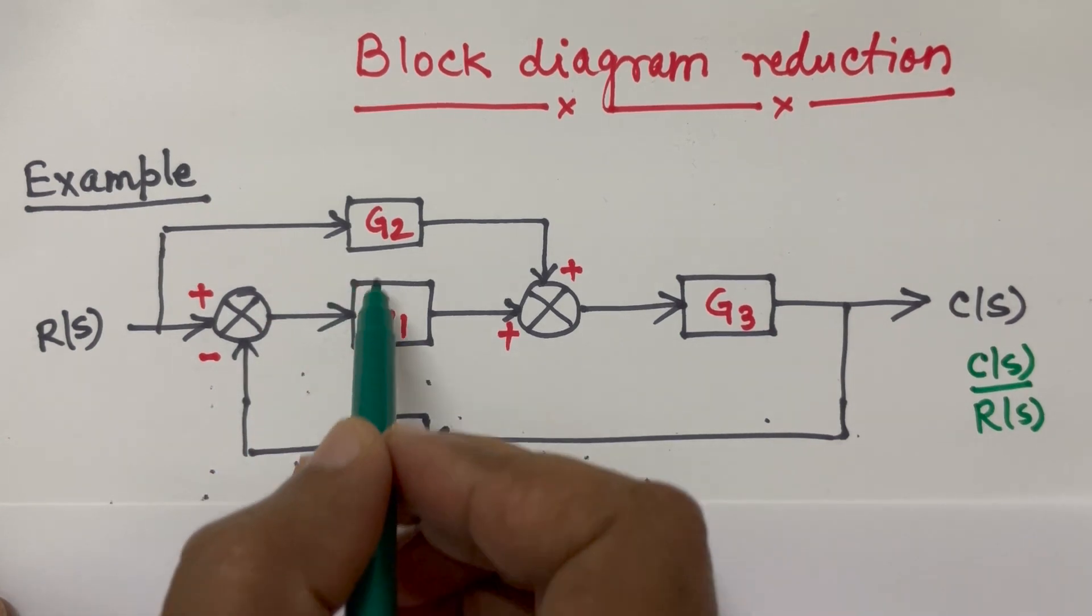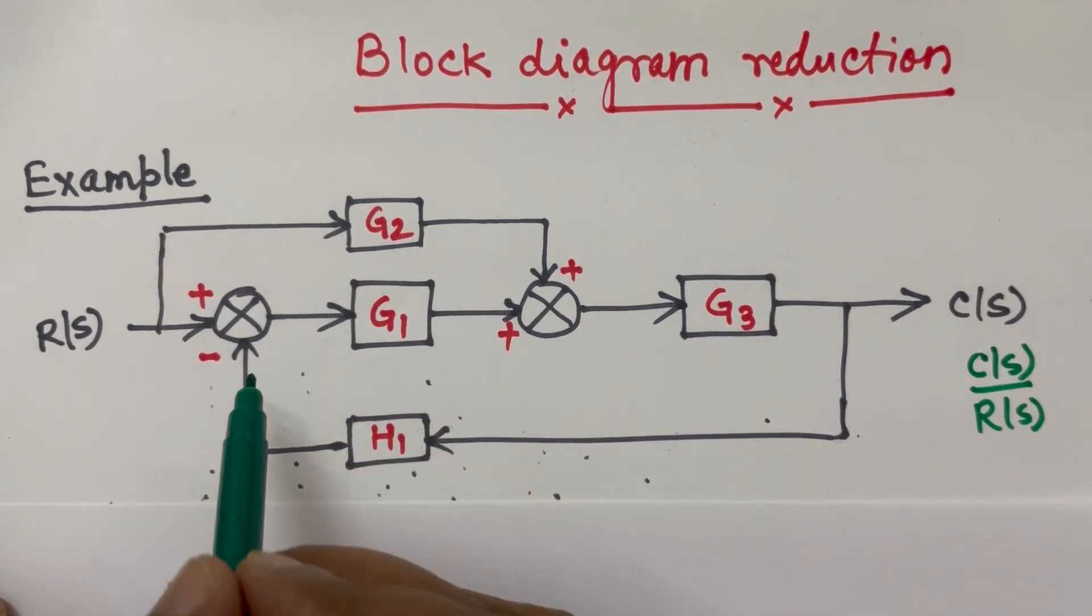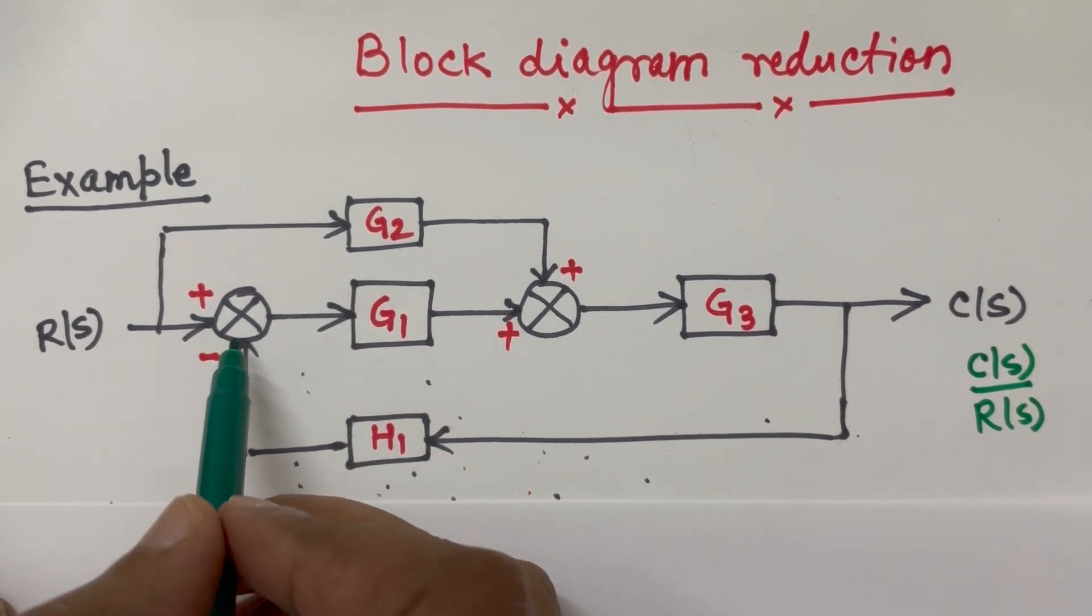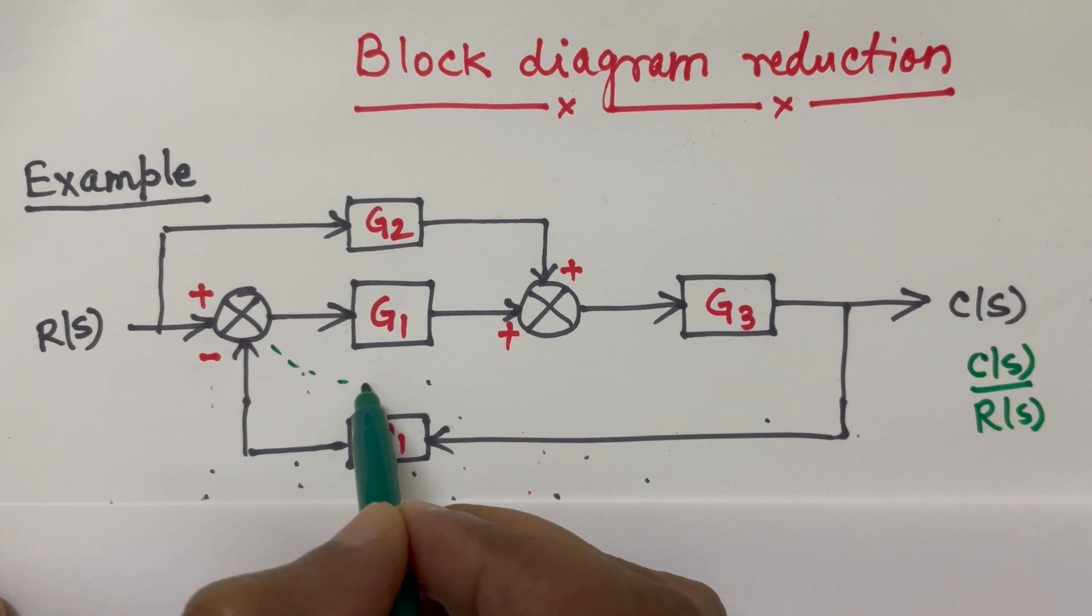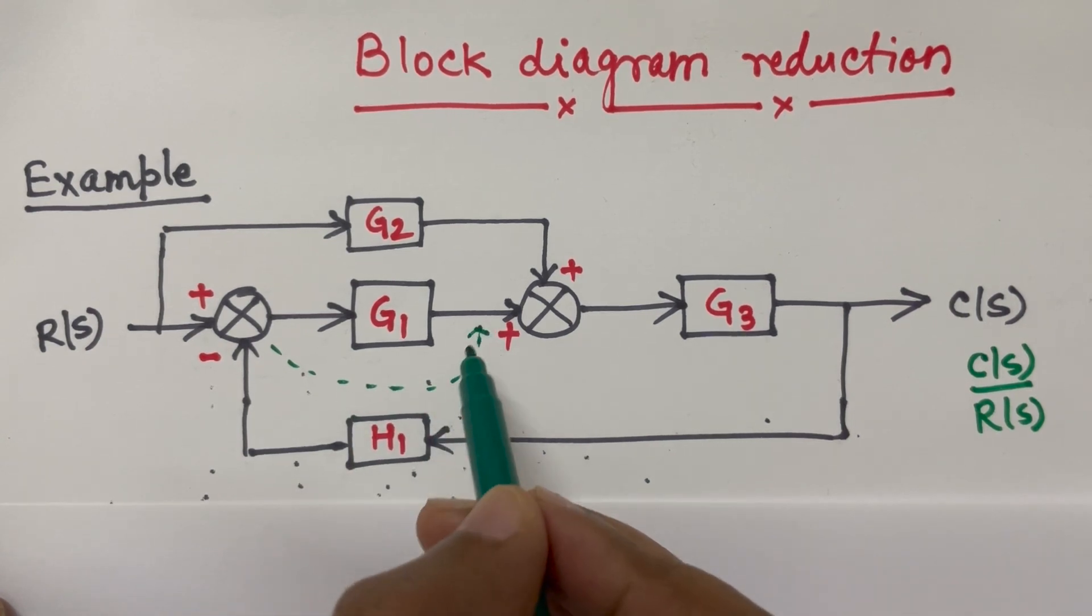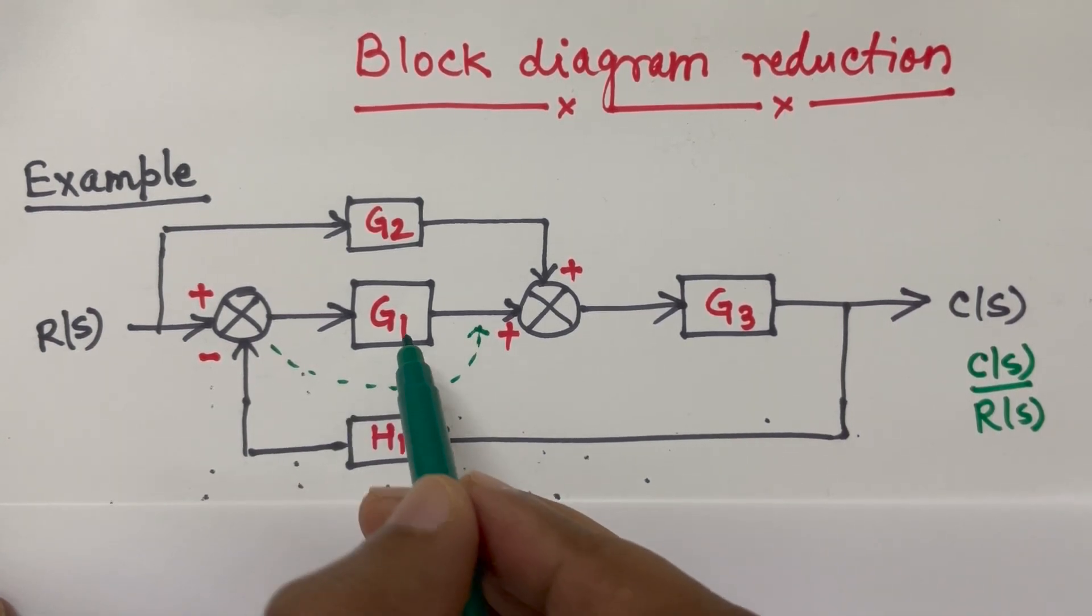If I am having G1 G2 in parallel then we can directly add them, but right now I can't add so this summing point is trouble here. So what I can do is I can shift this summing point next to G1 block.